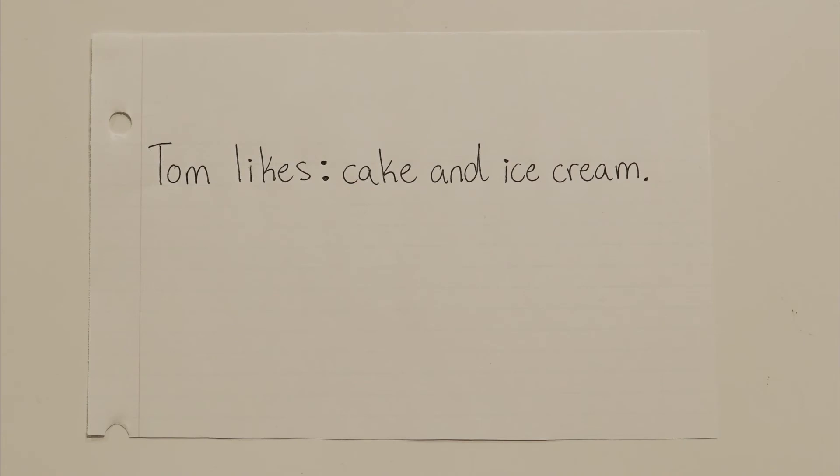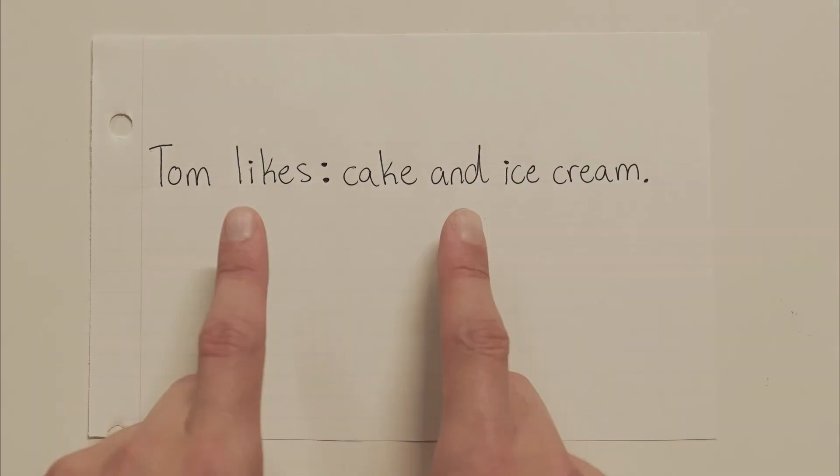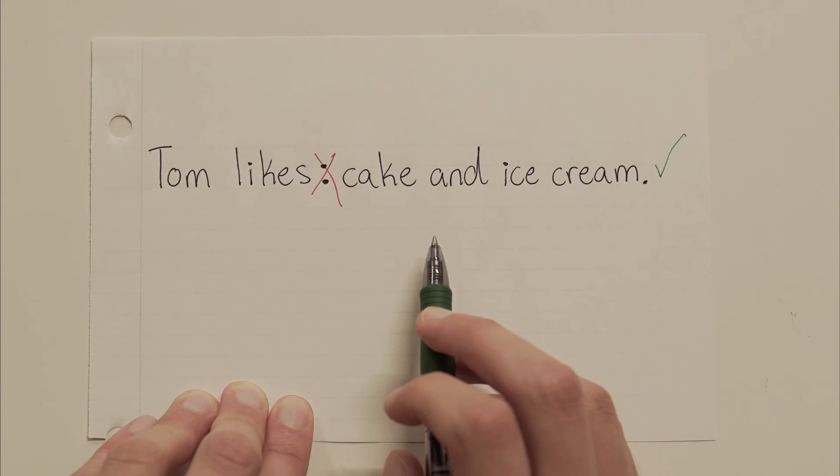Next one. Tom likes: cake and ice cream. Hmm. Okay. Well, unfortunately, we have the exact same problem here. Tom likes is not a sentence. So, this one's wrong too. And don't be fooled. Do not get lazy. You need to make sure there is a full sentence before that colon. To some people, this might look correct because the cake and ice cream part is giving more information about what Tom likes. But you don't have a complete sentence before that. So, it is not correct. Just like the last one, this sentence does not need a colon at all. It should just say, Tom likes cake and ice cream with a period at the end. That's all. Don't just start throwing colons into every sentence you see that has a list in it. That's not how they work.